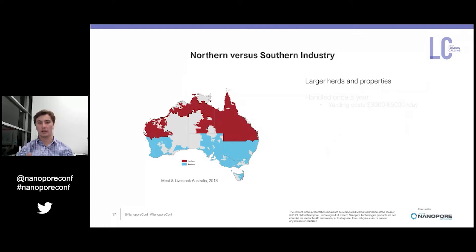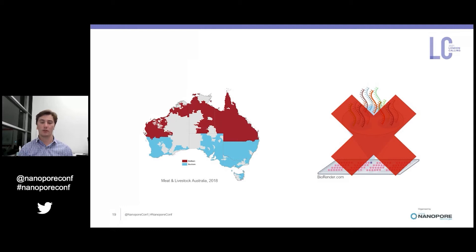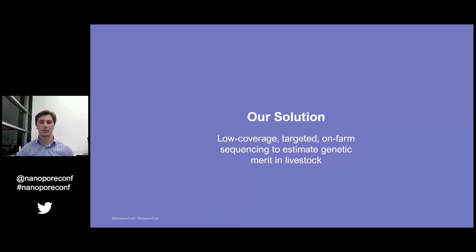The northern Australian beef industry, on the other hand, is characterized by large herds and very large properties. To put it in perspective, some of Australia's larger cattle stations in the north are actually the size of Israel. Animals in northern Australia are yarded using helicopters and aeroplanes to find them, with people on motorbikes or in cars to help bring them in. The image here is taken from a helicopter helping to yard about 1,500 animals with a handful of motorbikes on the ground. Yarding animals in northern Australia is extremely expensive and only done once a year, meaning the traditional SNP array pipeline isn't well suited to the northern beef industry — and this has hindered the adoption of genomic selection in the north.